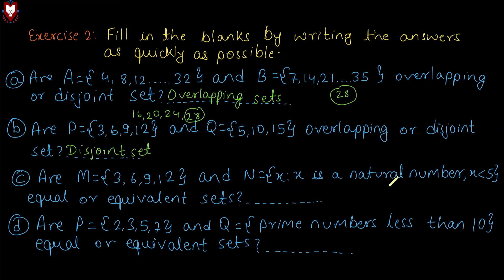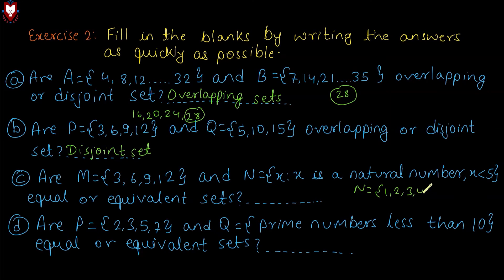Now let's convert set N to the list method. Set N equals natural numbers less than 5, which gives us 1, 2, 3, 4.